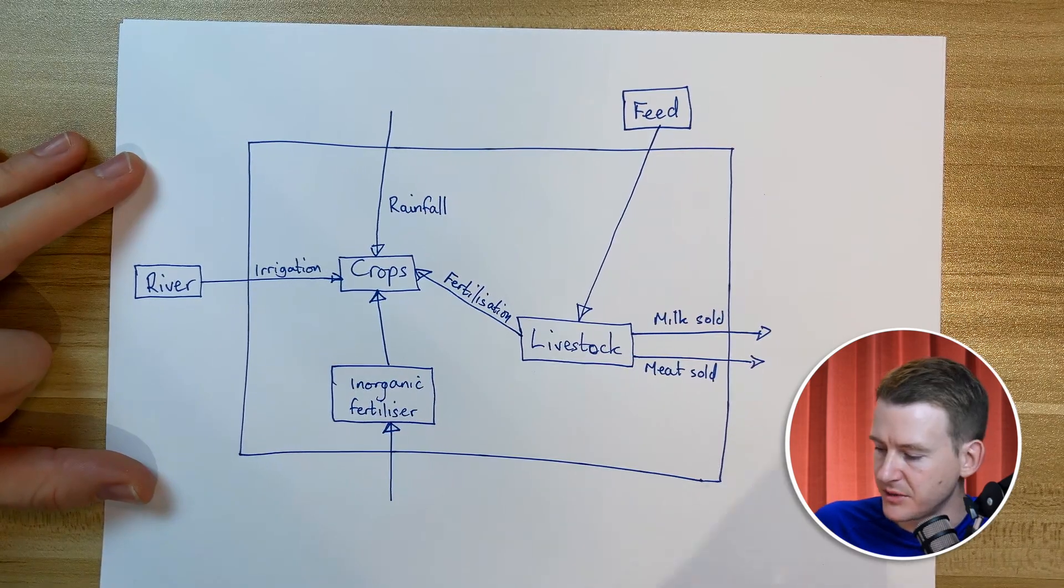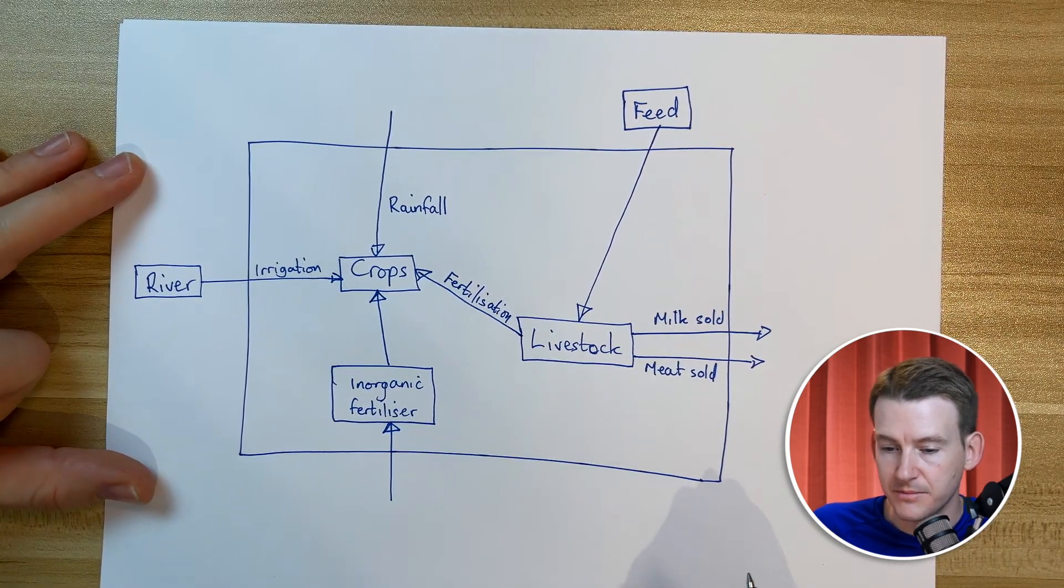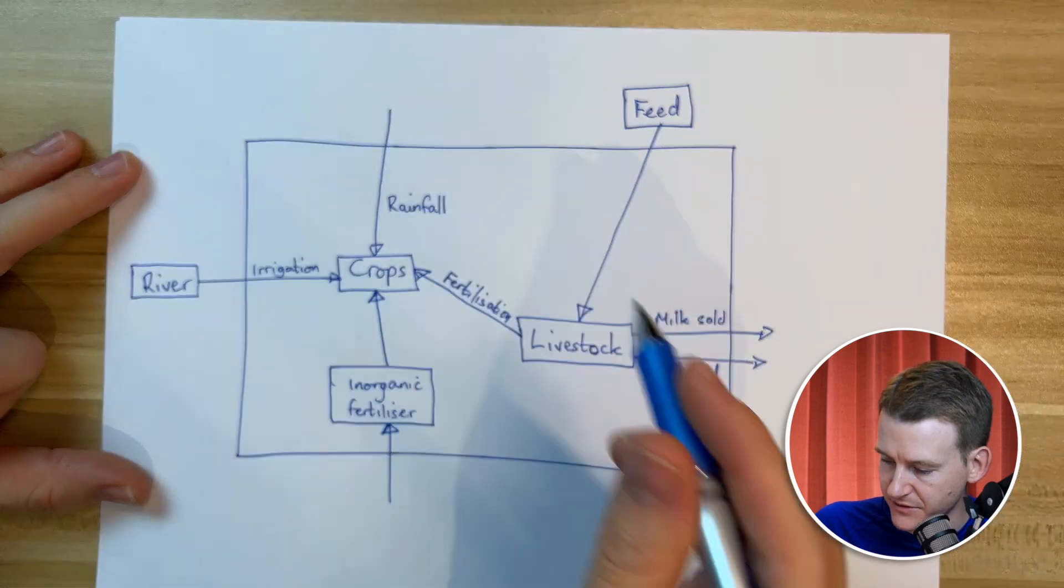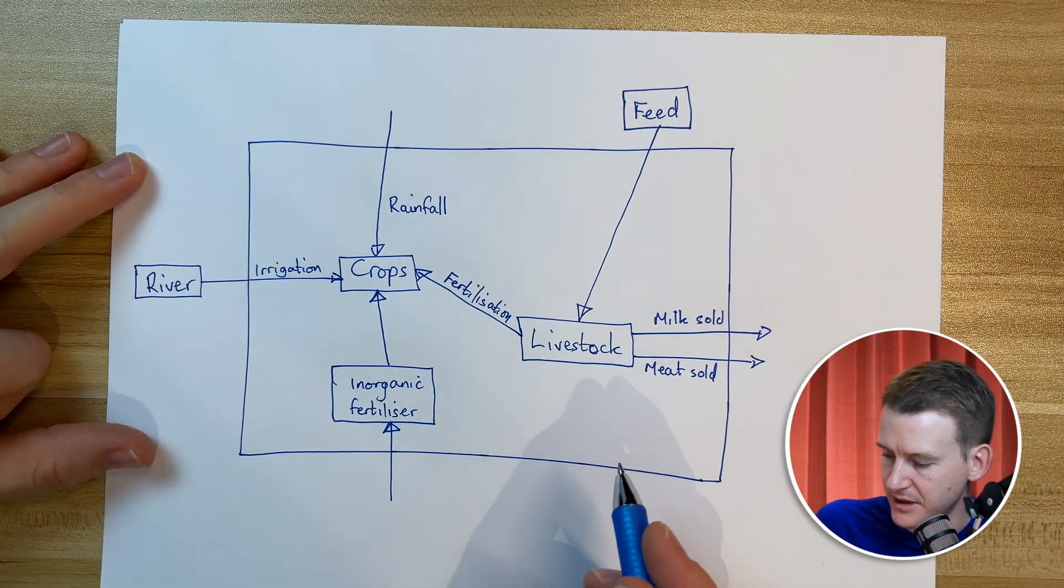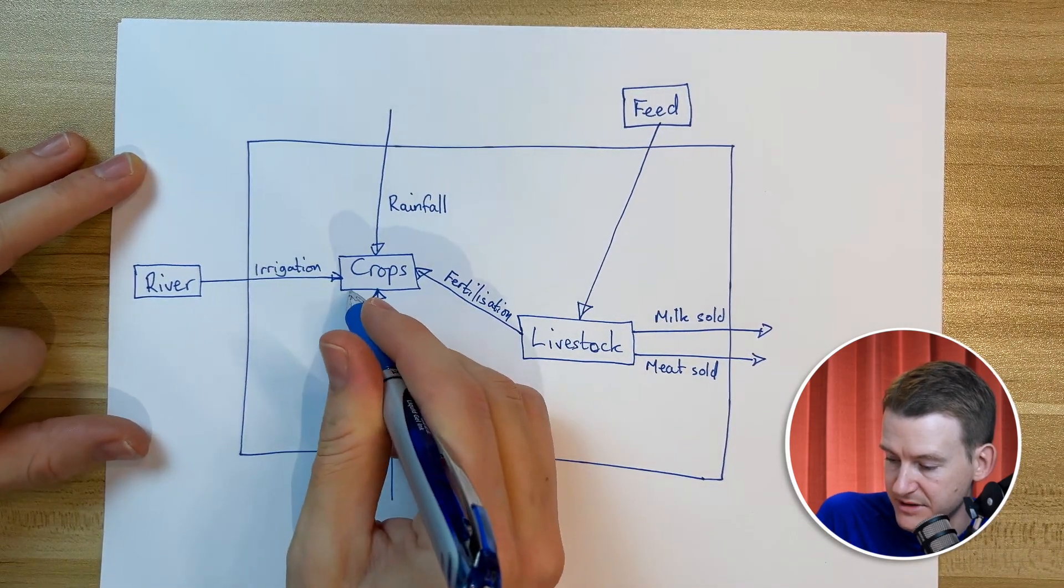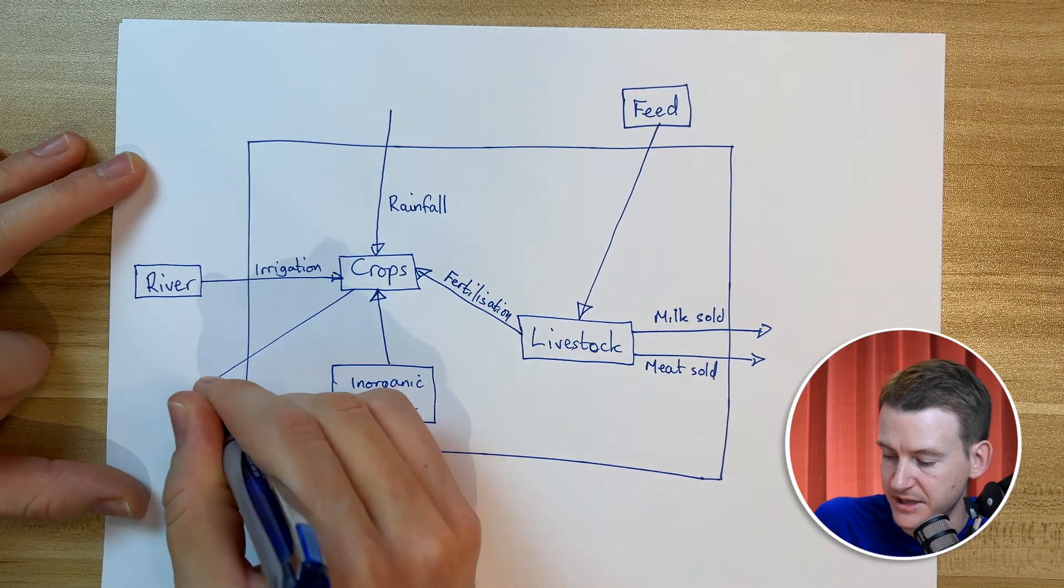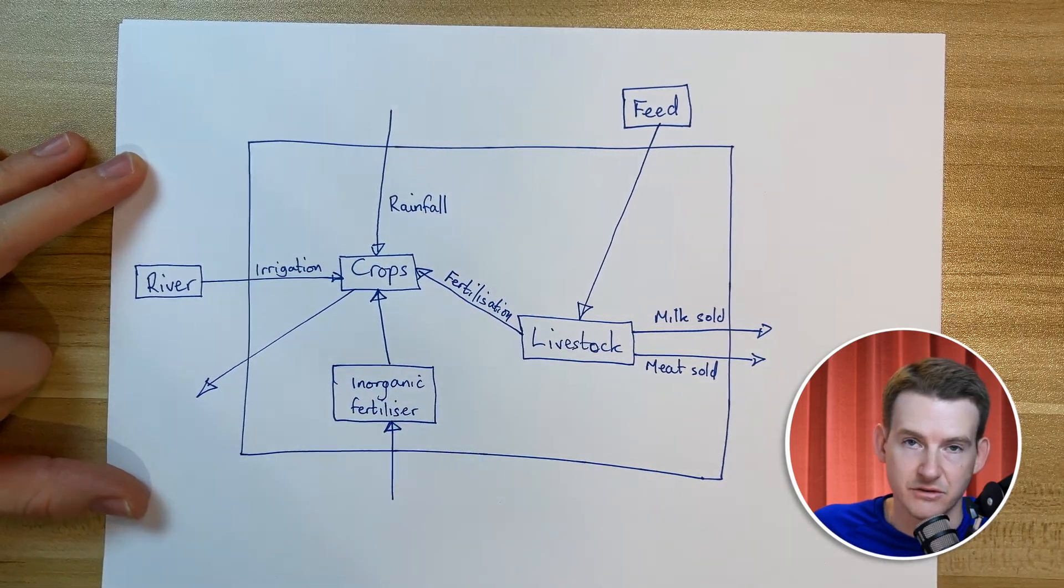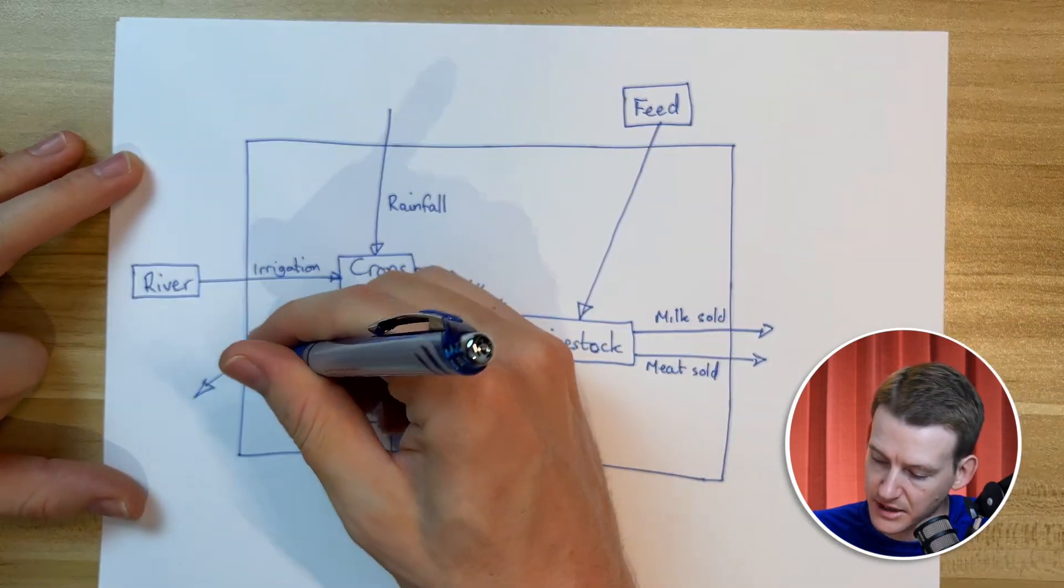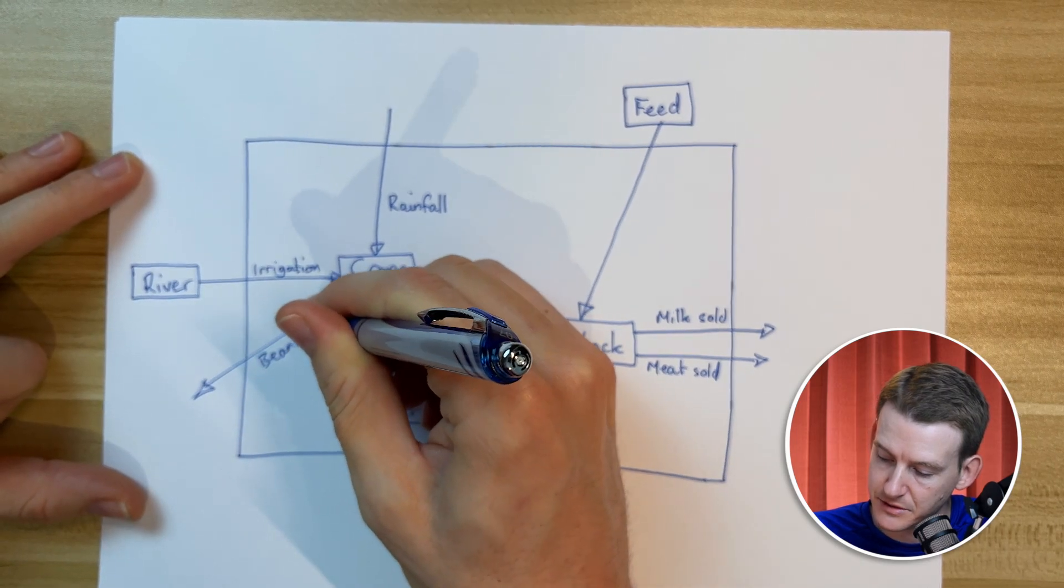Now we haven't actually shown the crops being output from the system. This is an output, and let's say for example this farming system is producing beans, that the crop is producing beans. So then we could call that beans sold.